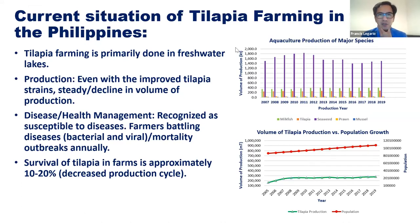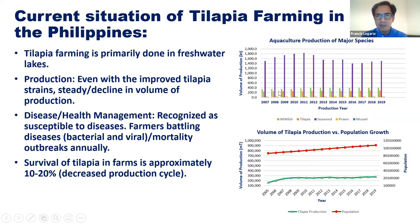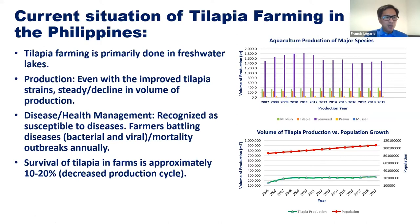In terms of aquaculture production, the top five species we are producing are seaweed, milkfish, tilapia, prawn, and mussel. In terms of the volume of production of tilapia, it has been steadily declining over the years, although our population is increasing. In the Philippines, our production of tilapia is mostly for domestic consumption.